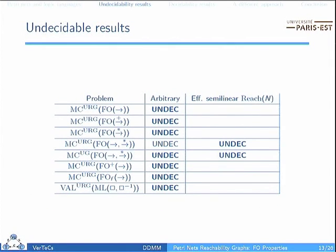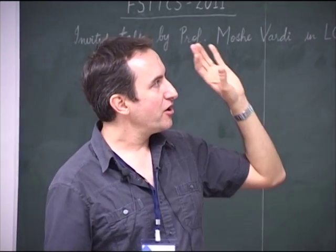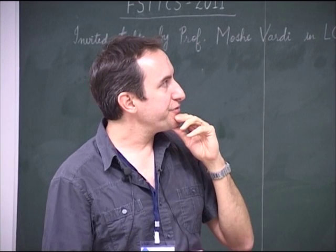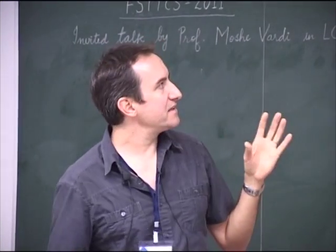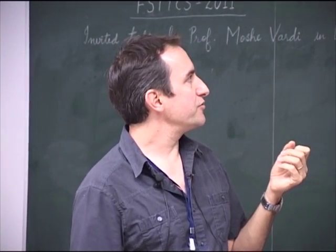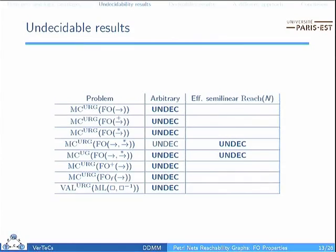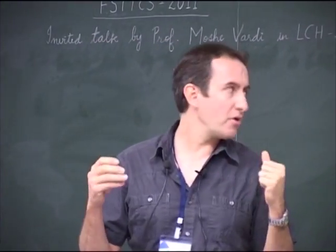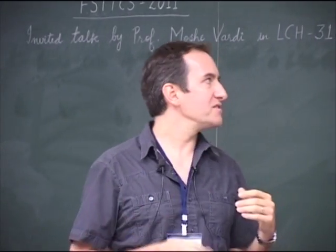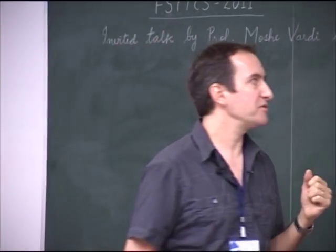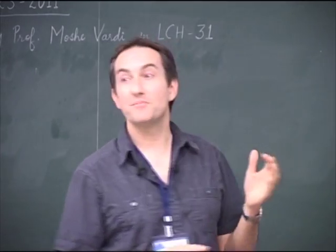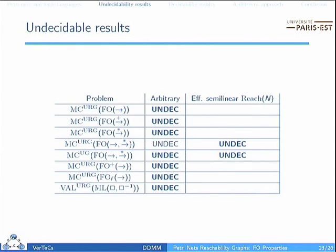In this slide I tried to provide a very condensed summary of the results we have achieved. Unfortunately, all these results are undecidable. The main result is the undecidability of first-order logic of PetriNets with the reachable graph and only the next predicate. The other results are not direct consequences but variations where the arguments are more or less the same. There are lots of white cells in the table, so there are still some hopes for decidability.